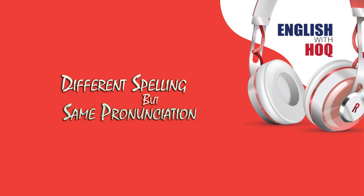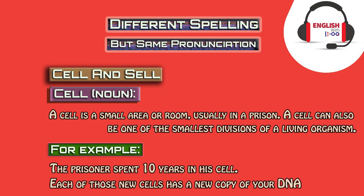Different spelling but same pronunciation: cell and sell. Cell is a noun — a cell is a small area or room, usually in a prison. A cell can also be one of the smallest units of a living organism. For example: the prisoner spent 10 years in his cell. Each of those new cells has a new copy of your DNA.